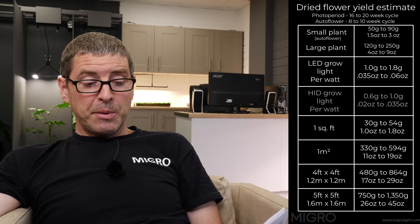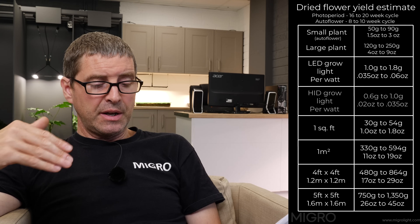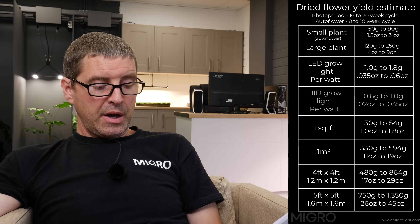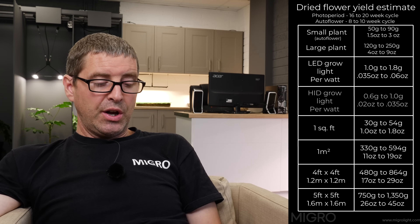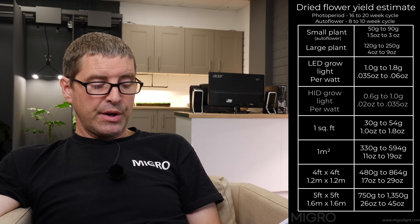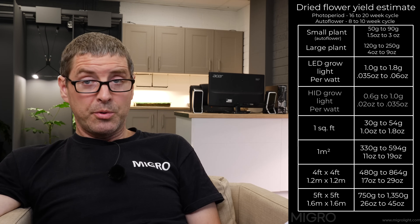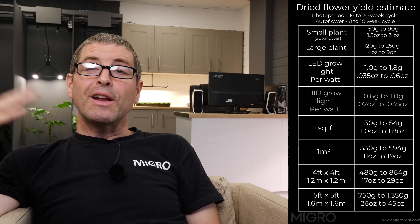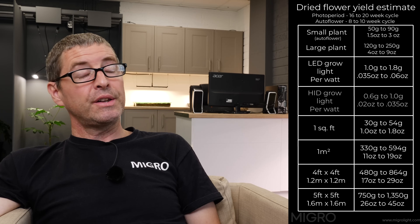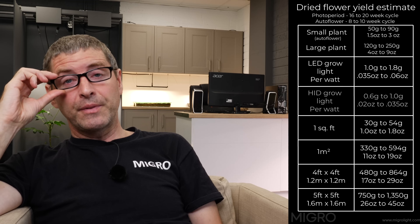In terms of breaking down by area, for one square foot it's about 30 to 54 grams — just translating the same specifications by watt and by area. And when you go into tent size, for four foot by four foot, about 500 to 900 grams is what you should expect — that's 17 to 29 ounces — with high efficiency LED. For five foot by five foot proportionally, you can see up to 750 up to 1350 grams. I did test these estimates before doing the video and I think these estimates are reasonable and achievable.